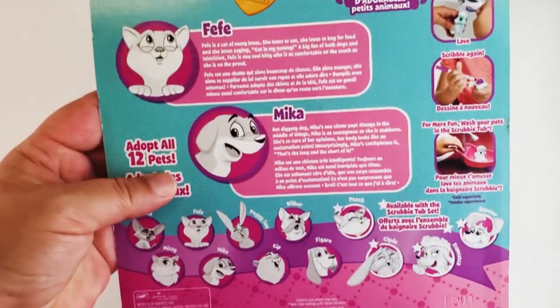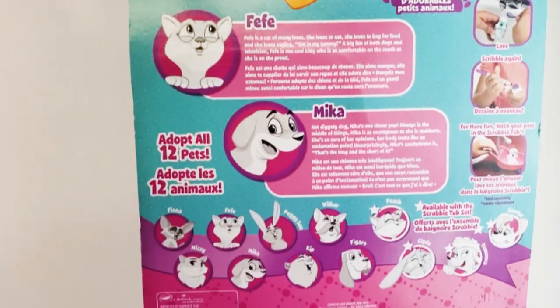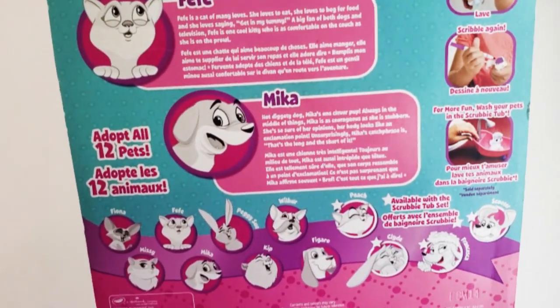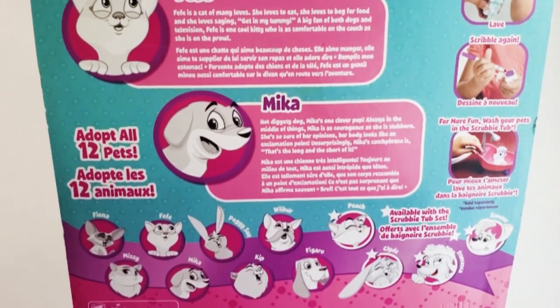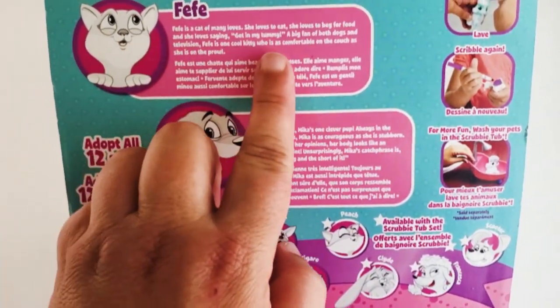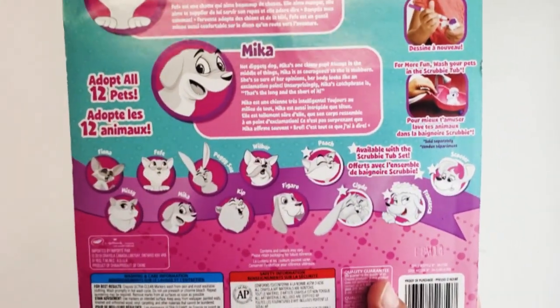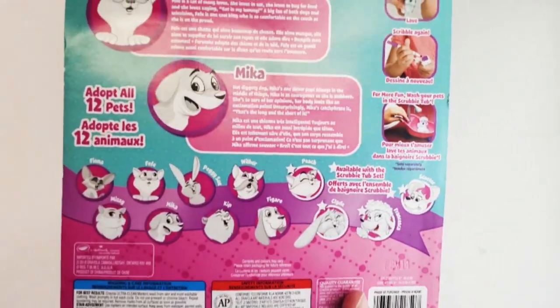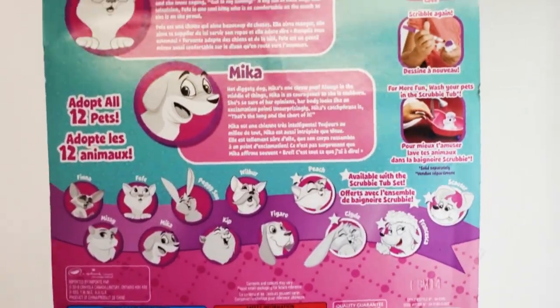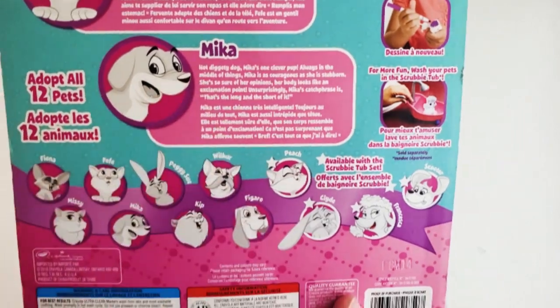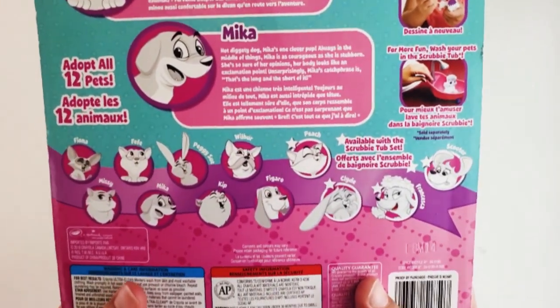If you look on the back it shows you all 12 pets and it tells you about them. This is Fifi the cat - she loves to eat, she loves to beg for food, and she loves saying 'get in my tummy.' I'm a big fan of dogs and cats. And then you have Mika, who's a dachshund or a hot dog or a sausage dog depending on what you want to call them. Mika is a clever pup.